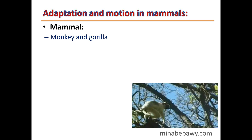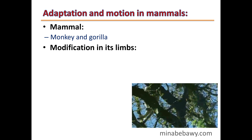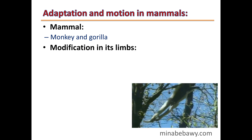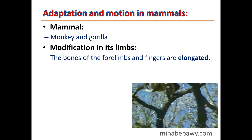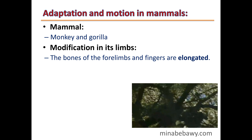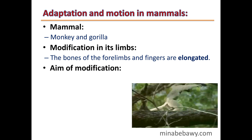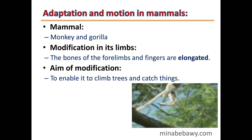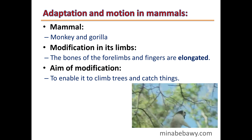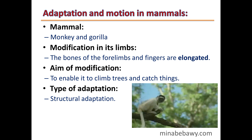Example 4: Monkey and Gorilla. The bones of the forelimbs and fingers are elongated. The aim of this modification is to enable them to climb trees and catch things. Type of adaptation: Structural adaptation.